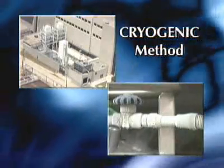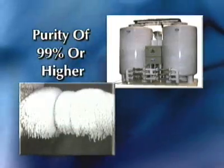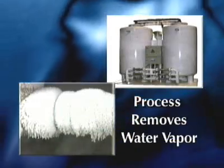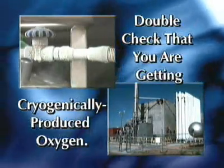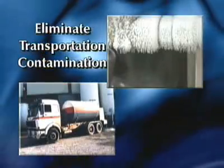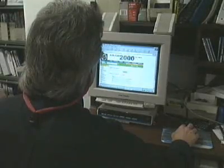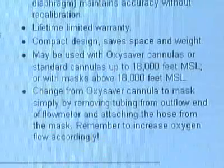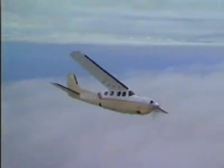Most of the oxygen sold today in the U.S., including aviation oxygen, is produced by a cryogenic method using sub-freezing temperatures. This method produces an oxygen purity of 99% or higher. Aviation oxygen is subject to a process that removes water vapor. It is recommended that you double-check that you are getting oxygen produced cryogenically, and purchase liquid oxygen as close to the production site as possible to eliminate transportation contamination. You are responsible for checking with the equipment manufacturer for the latest operational and emergency guidelines to assure your safety. By following the necessary precautions and knowing how to operate your oxygen equipment effectively, you will be able to fly more confidently and more safely.